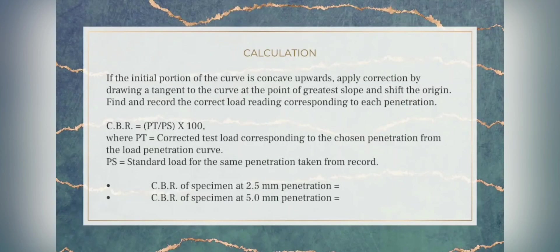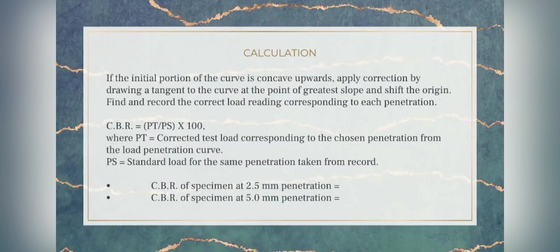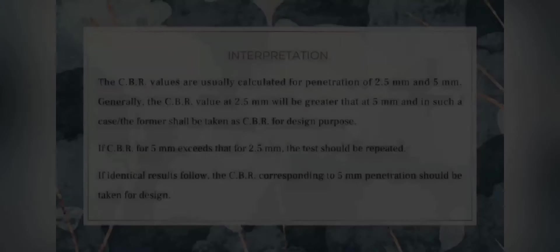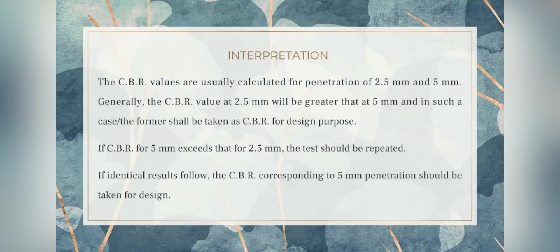For calculation: if the initial portion of the curve is concave upwards, apply a correction by drawing a tangent to the curve at the point of greatest slope and shift the origin. Find and record the corrected load reading corresponding to each penetration. The formula for CBR value is: PT (the corrected test load corresponding to the chosen penetration from the load-penetration curve) divided by the standard load for the same penetration, multiplied by 100. The CBR value at 2.5 mm penetration and 5 mm penetration will be recorded.